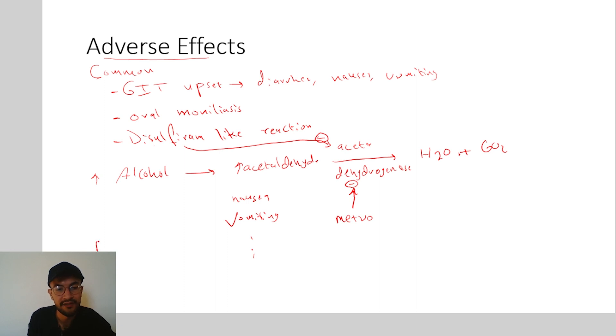We also have rare adverse effects and those include neurological toxicity in form of headache, dizziness, vertigo and even seizures because metronidazole crosses the blood brain barrier and would cause neurological toxicity in rare settings. It also might cause Stevens-Johnson syndrome which is severe skin reaction and also it might cause bone marrow suppression.